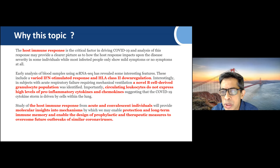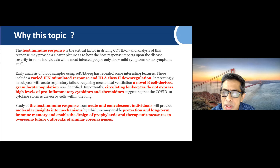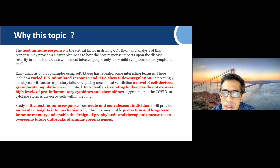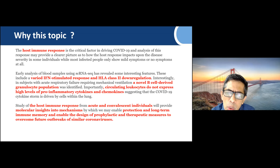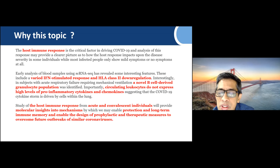There was a very variable response of the interferon-stimulated response and HLA class 2 downregulation. Interestingly, in subjects who had a mechanical ventilator and acute respiratory failure, there was a novel B cell-derived granulocyte population. Importantly, there were circulating leukocytes which do not express high levels of pro-inflammatory cytokines and chemokines, clearly suggesting that COVID-19 cytokine storm is driven by cells inside the lung. It is very crucial to study the host immune response from acute and convalescent individuals, which provides molecular insights into mechanisms of protection and long-term immune memory.